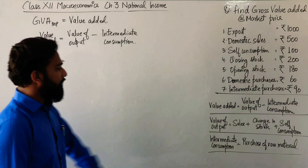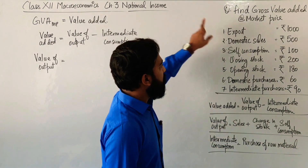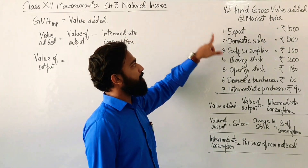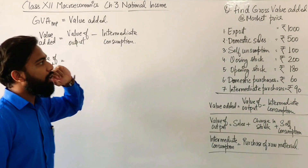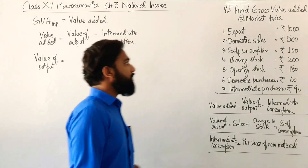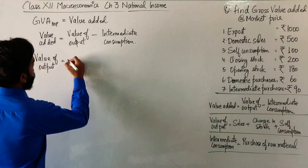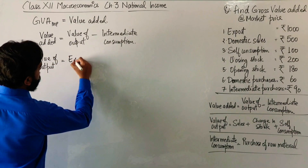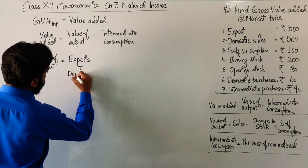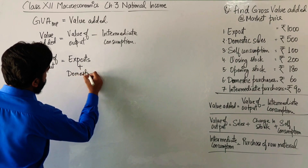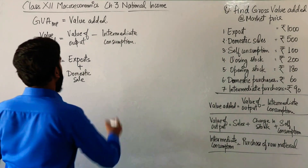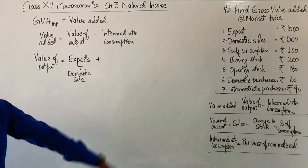For value of output, we need sales. Is there any sales given? Yes, domestic sales is given as rupees 500 and exports are 1000. So the collective sales — we have to add both of these. We have to calculate exports plus domestic sales to get the value of sales. Next, change in stock.